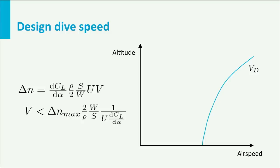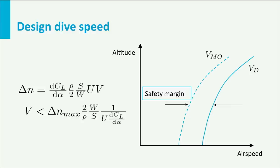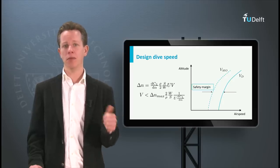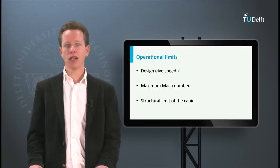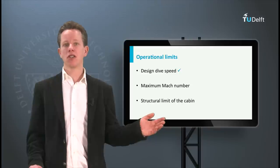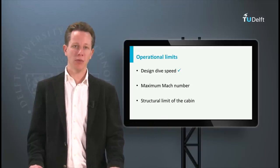In order to be on the safe side, a small safety margin has been defined by the regulatory bodies with respect to the design dive speed. This limit is called the maximum operating speed. This is the first operational limit. Let's also have a look at the other operational limits, starting with the maximum Mach number.